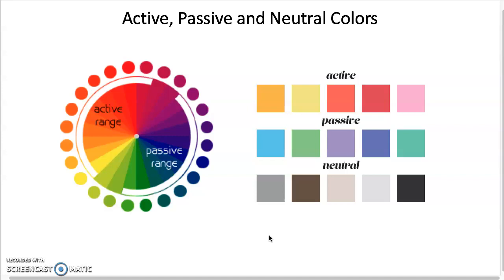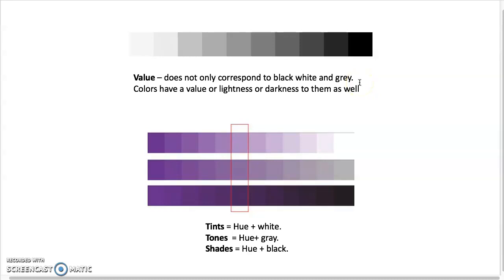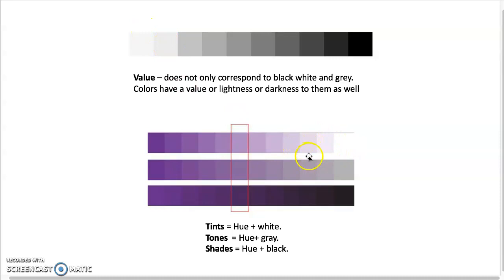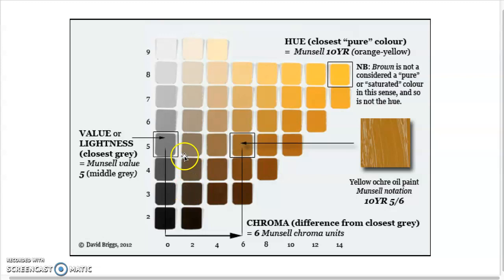For the project, you'll create a color swatch scale similar to the value scale you did before. Color and value relate to each other — if you add black to a color it becomes a darker value, and adding white makes it lighter. A tint is your hue plus white, a tone is your hue plus gray, and a shade is your hue plus black. All colors have a value to them, whether achromatic or chromatic — that's the key point.